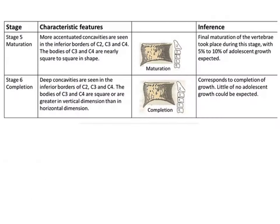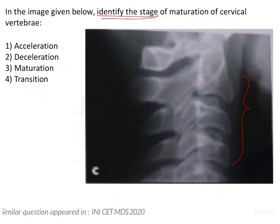Coming back to the question and identifying the stage: there is a concavity present on C2, concavity present on C3, slight concavity on C4 (not very prominent), and the shape is rectangular. So this is the stage of transition — CVMI stage 3.